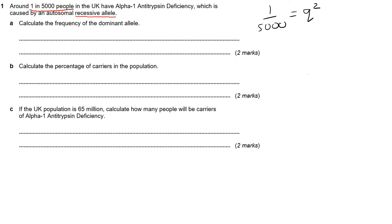If we know that one over 5,000 is Q squared, then P plus Q equals one. That means that one minus the one over 5,000 equals P. So we just simply did some rearranging in the equation there.